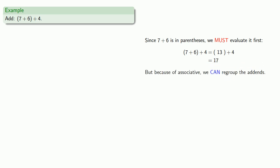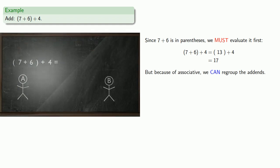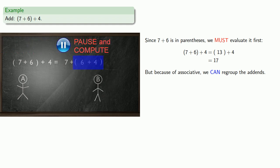But because of the associativity of addition, we can regroup the addends. In this case, rather than doing seven plus six first, let's do six plus four first, and then seven plus ten is seventeen.